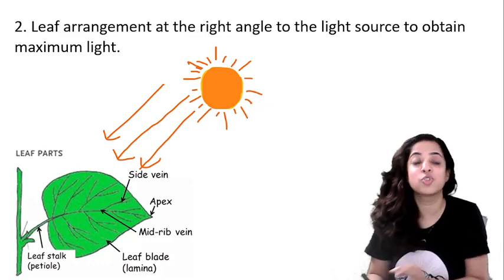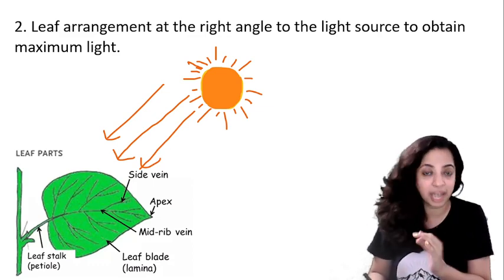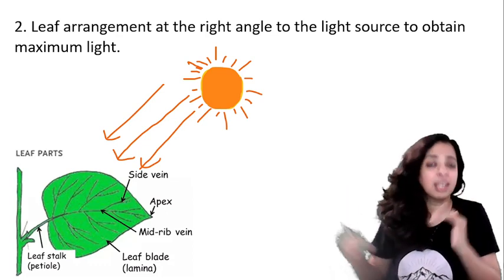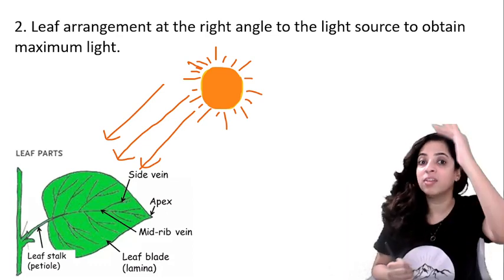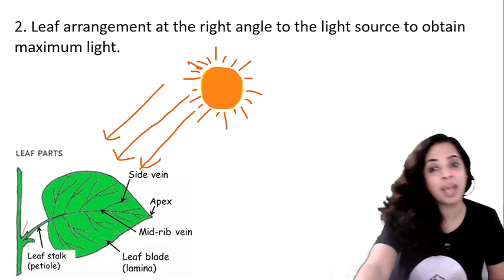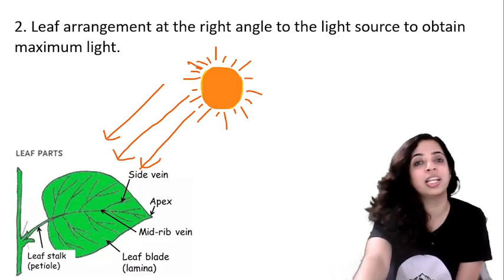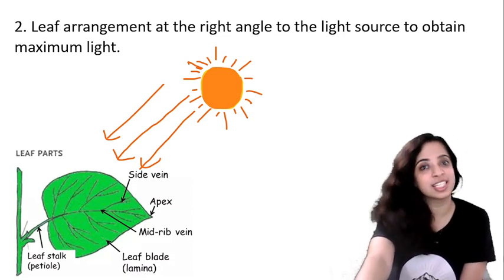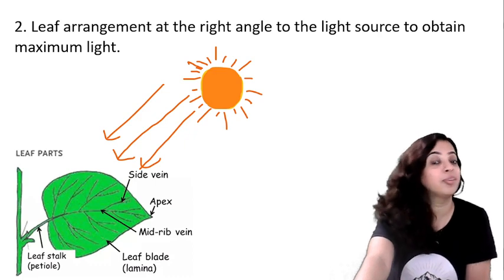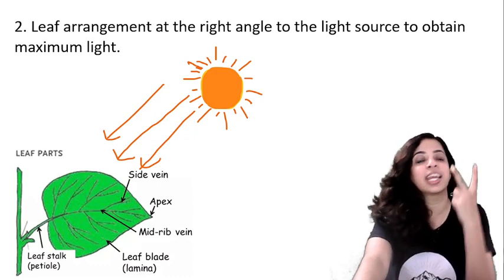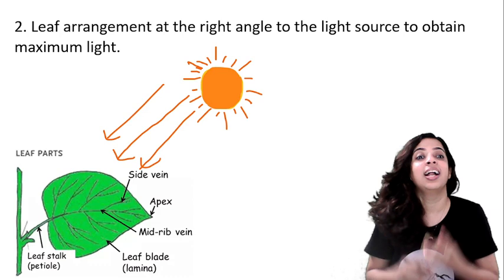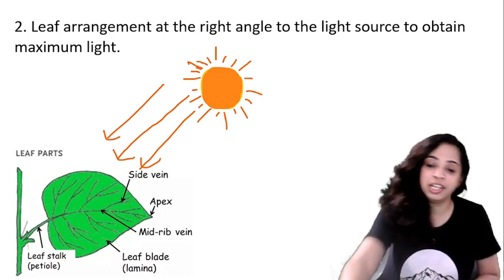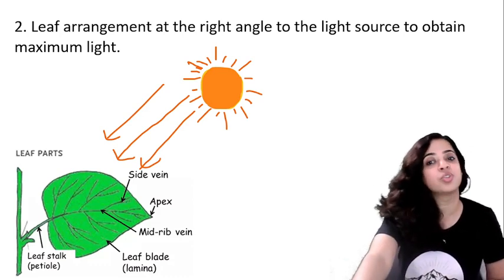If the light falls obliquely, the maximum light will not fall. Whenever it falls at right angles, then maximum light falls on the leaves and it helps in photosynthesis. We all know that sunlight is helpful in photosynthesis. So the second adaptation in leaf is the way it is arranged - leaf arrangement at right angles to the light source.